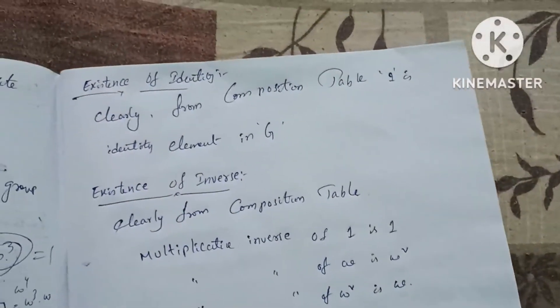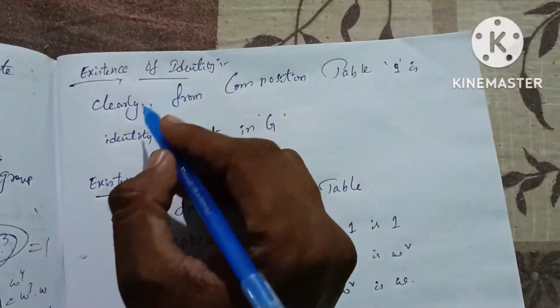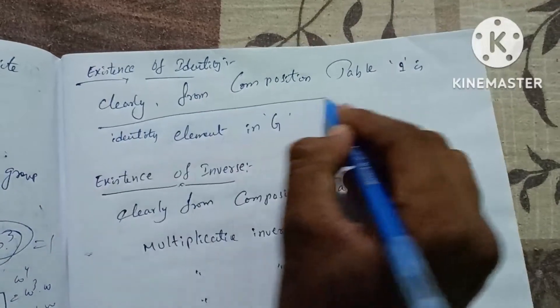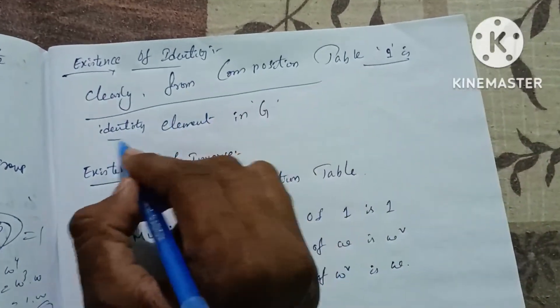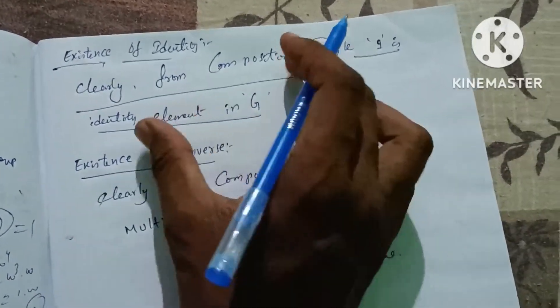The third law is existence of identity. Clearly, from the composition table, 1 is an identity element in G.